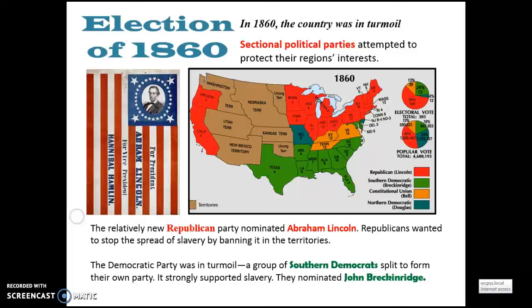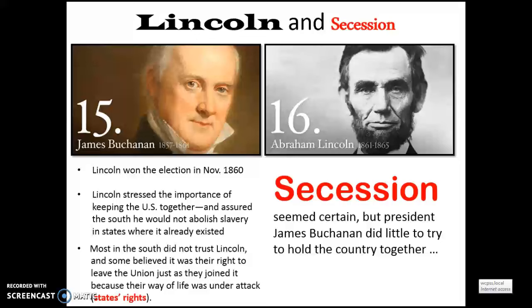The election of 1860 would be the final straw. In 1860 the country was in turmoil; sectional political parties attempted to protect their region's interests. The relatively new Republican Party nominated Abraham Lincoln — Republicans wanted to stop the spread of slavery by banning it in the territories. The Democratic Party was in turmoil; a group of Southern Democrats split to form their own party that strongly supported slavery, nominating John Breckinridge. Lincoln won the election in November 1860. He stressed the importance of keeping the U.S. together and assured the South he would not abolish slavery in states where it already existed — he only said he wouldn't let slavery expand.